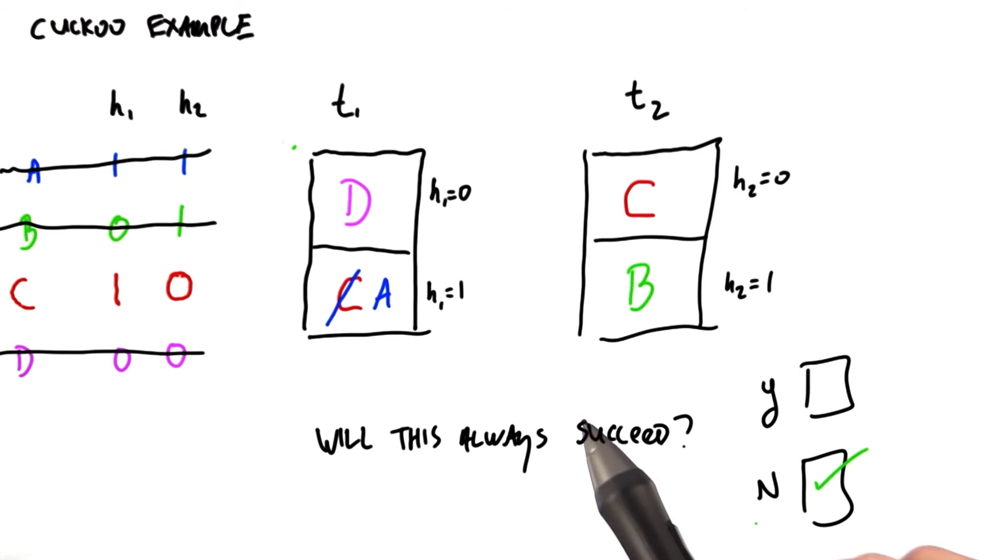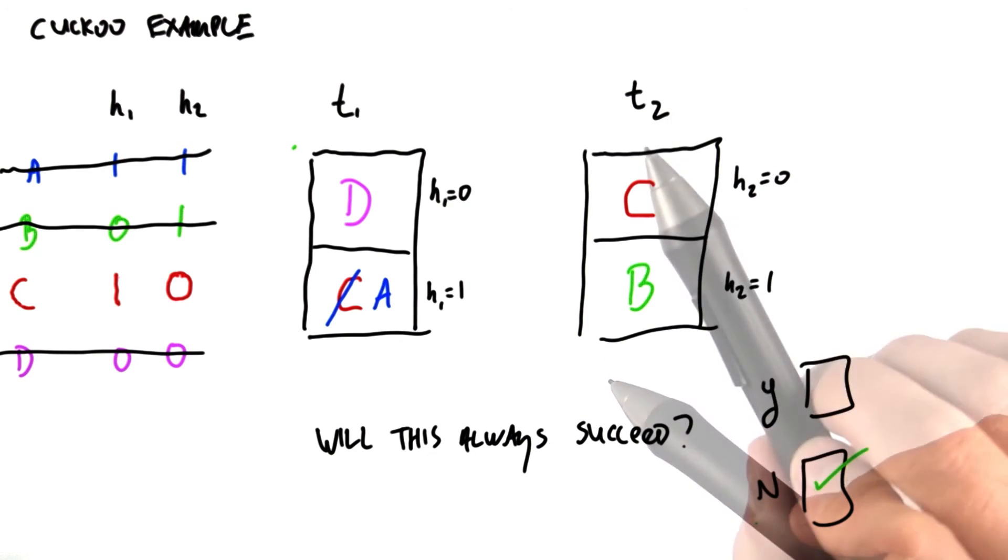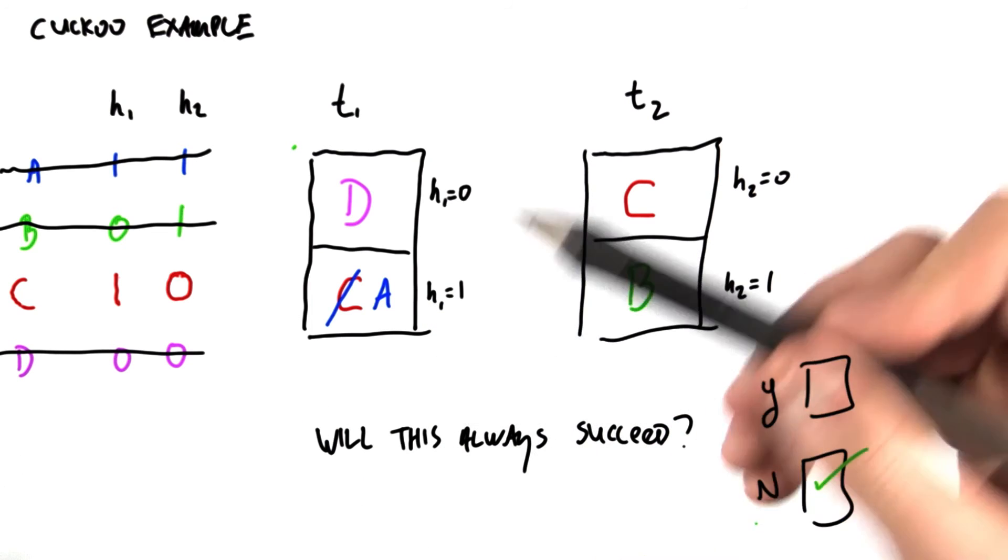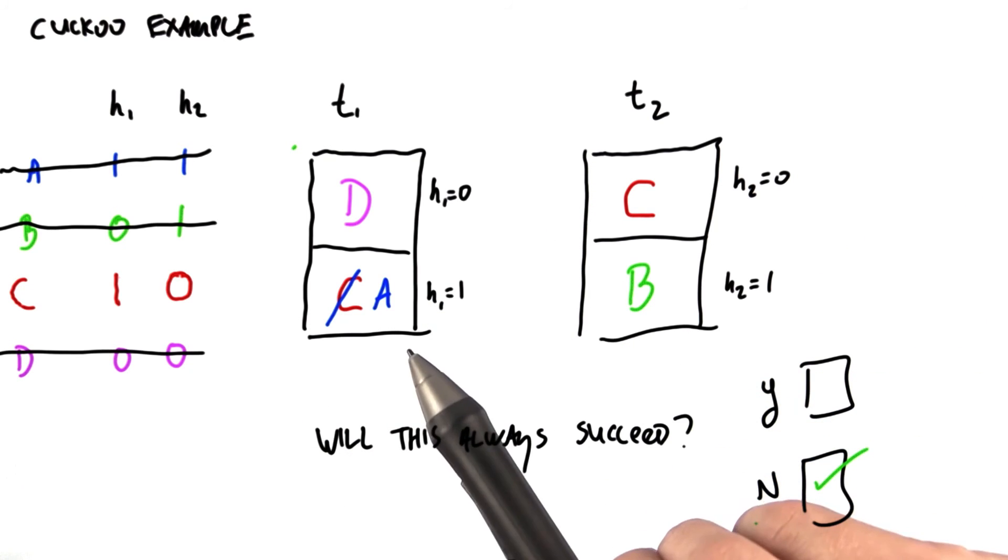Now, if we don't find it in any of those locations, it's just not in the hash table. Now, the nice part here is that this is a constant time lookup. It just requires t lookups, and t is a constant. It might be 2, it might be 3, and so on.